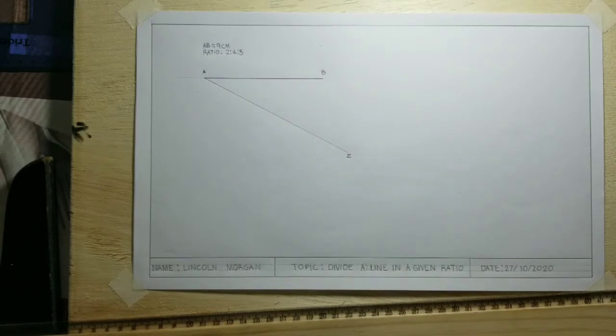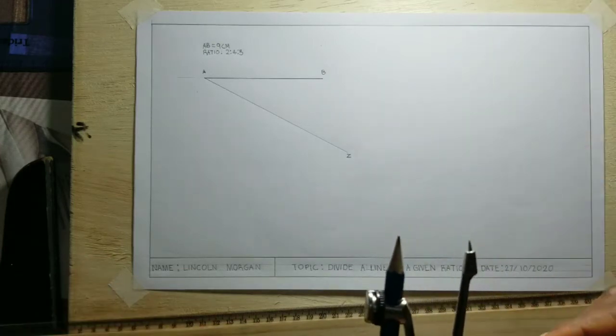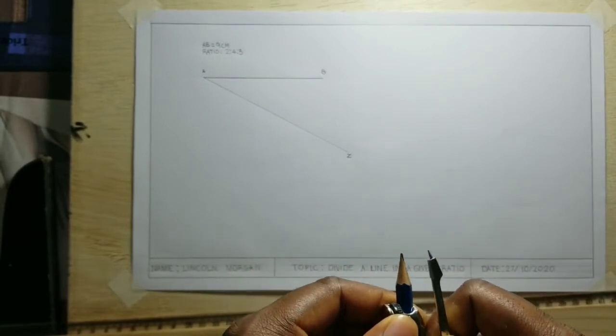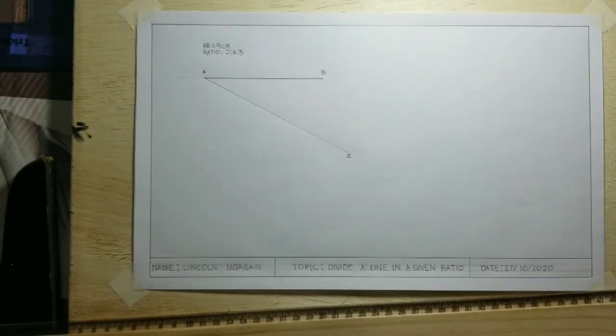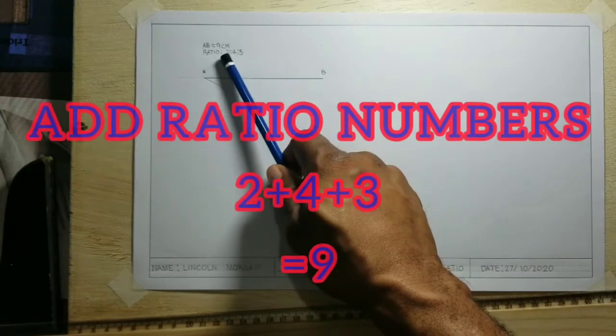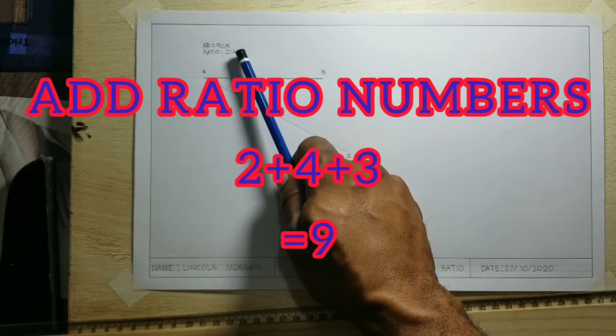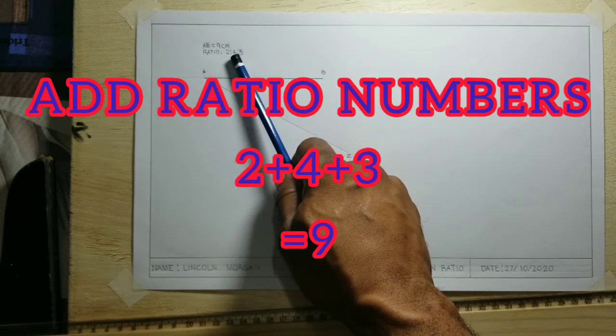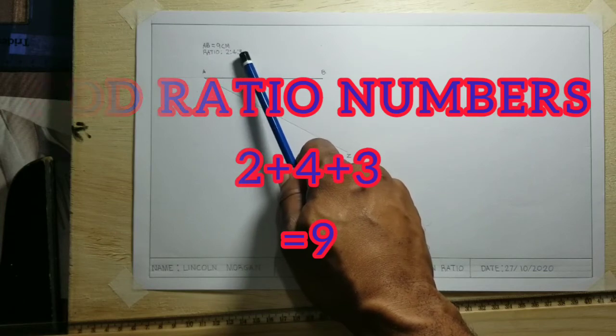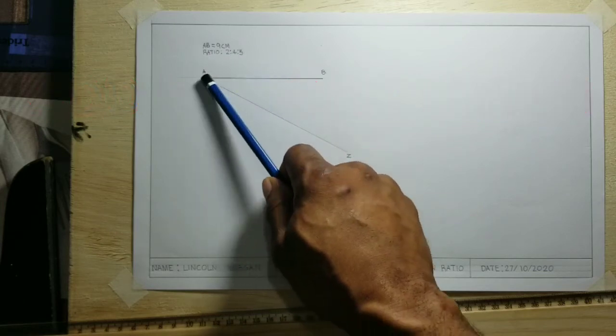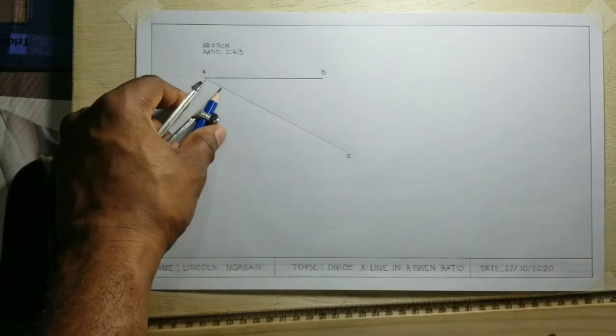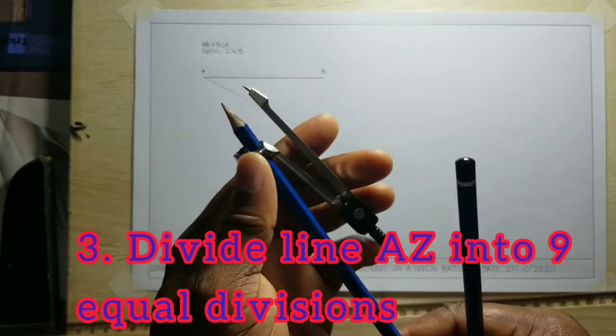Now, on the line AZ, we will take our compass and open it to a small, convenient radius. But before we do so, we need to add the ratio numbers 2 to 4 to 3. When we add 2 and 4, we get 6, and 6 and 3 equal to 9. So, this line will be divided into 9 parts using our compass.